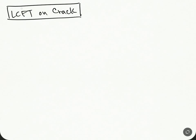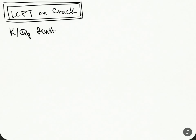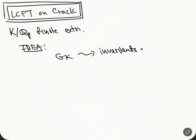This video is about local class field theory. K is a local field — specifically K over Qp, so this is going to be a mixed characteristic setting, and K is a finite extension of Qp. There are a number of invariants that one would like to recover just from the absolute Galois group of K. From GK, the absolute Galois group, we're going to recover many different interesting invariants of K.